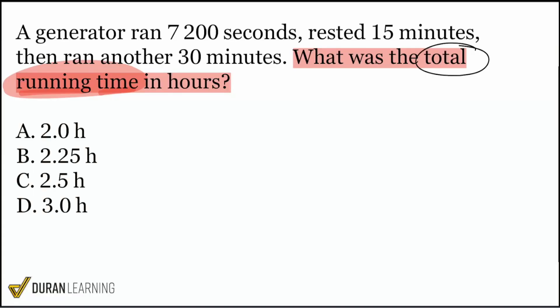So what we want is the total running time. All right, cool. So to get that, we have to understand all the different times that we're running for, add that all up, and we'll be all good. So with that, here we go. It says a generator ran for 7,200 seconds, then it rested 15 minutes, and then ran for another 30 minutes. So the total running time, what is that going to be? The total running time is going to be right over here, 7,200. But that's in seconds. And we're going to be adding that with the 30 minutes.